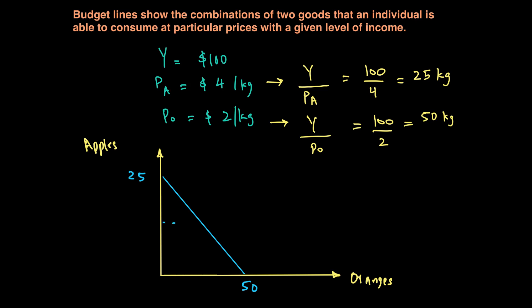For example, one combination using an income of $100 with the price of apples at $4 and oranges at $2 is 12.5 kgs of apples and 25 of oranges. All of these combinations on the budget line are affordable. Any combination inside would be affordable but doesn't use our full income. But an individual cannot consume any point beyond this.